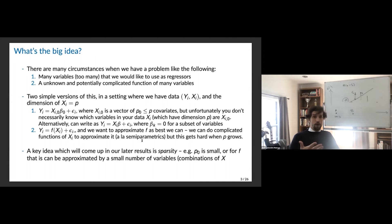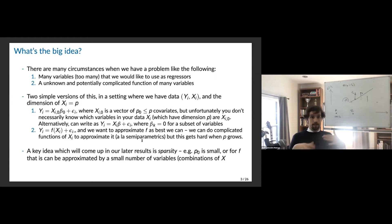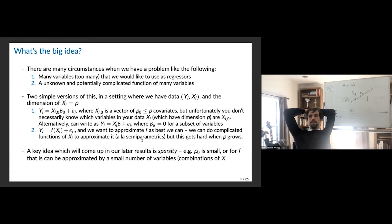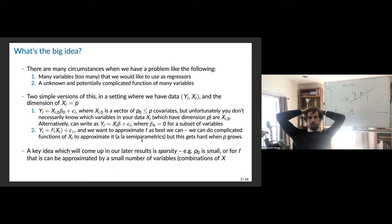The problem starts to blow up once you allow x to have higher dimension. If x has dimension five, there are so many different interactions and powers that it becomes very challenging to estimate and approximate. You don't want to just fully saturate the model and allow for all interactions and high powers of x. Instead you want to put those in and figure out which are the most important. The idea is that there is some sparse set of variables that matter — either p0 is small, or f can be approximated by some small number of combinations of x.